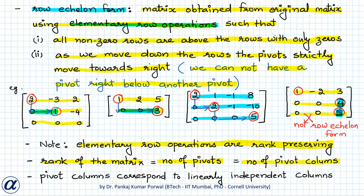The rank of a matrix equals the number of pivots or pivot columns. In the first matrix, the first and second columns are pivot columns; similarly for the second and third matrices. Importantly, the pivot columns in the row echelon form correspond to linearly independent columns of the original matrix. The remaining non-pivot columns are linearly dependent on the pivot columns and can be written as a linear combination of the pivot columns.